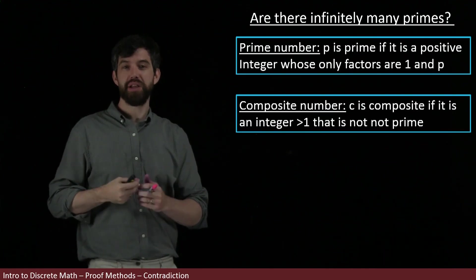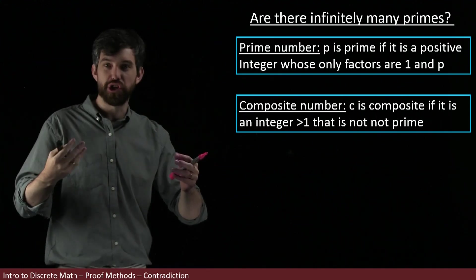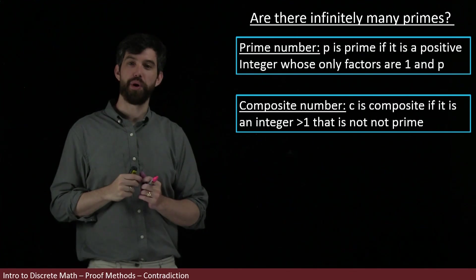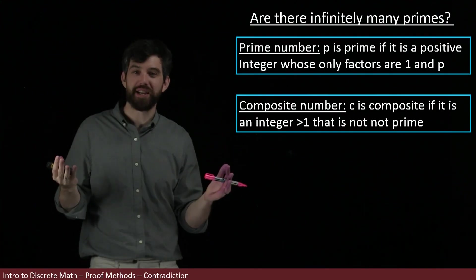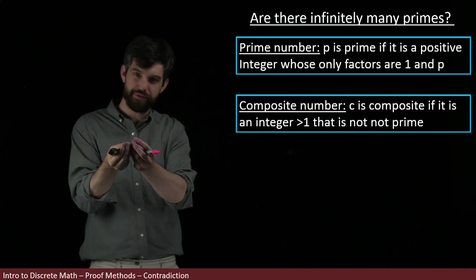We can talk about a composite number, which is a positive integer greater than one that is not prime. This is a number like six, where six has one and six as factors, but it also has two and three as factors.